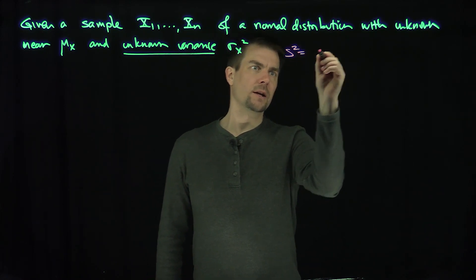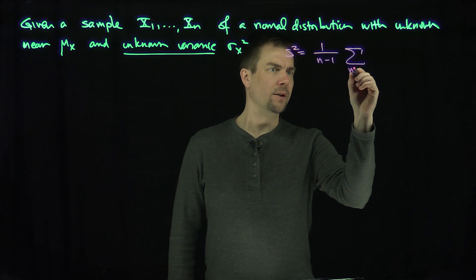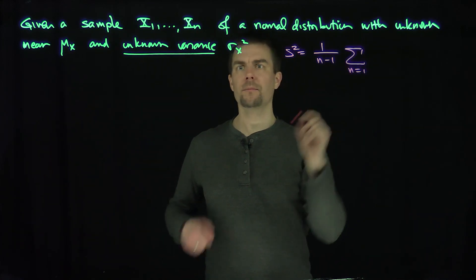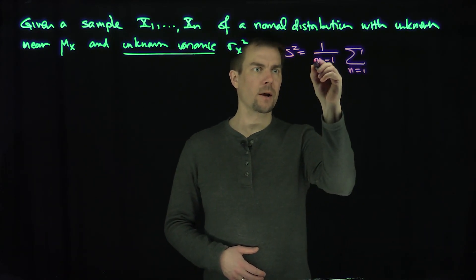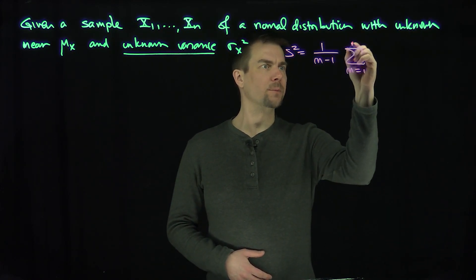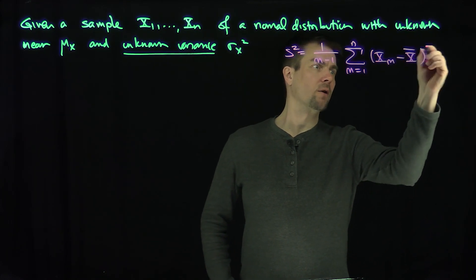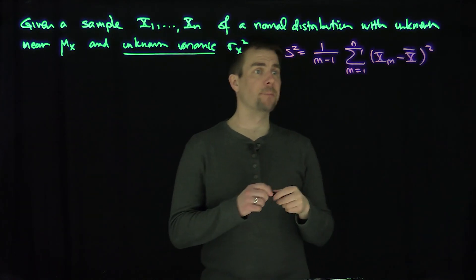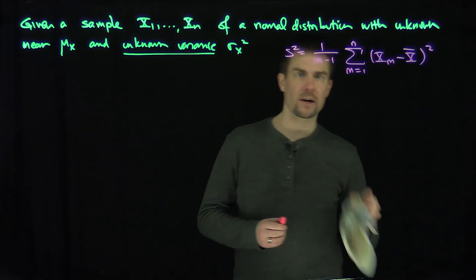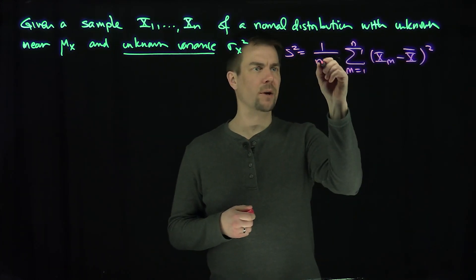s squared is 1 over n minus 1, the sum. Let's say I'm using n as my index over here, so I should probably change this to an m. So n, m of xm minus x bar quantity squared. Remember, that's a chi-squared distribution with n minus 1 degrees of freedom, so that should be an n over here. My index is just m, so that's going to be n minus 1 degrees of freedom.